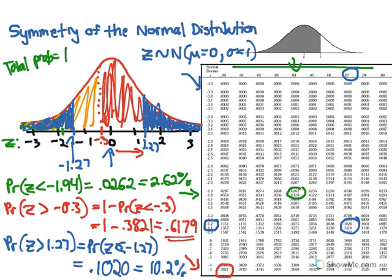So, you can see that blue area is about 10.2% of the total area under the curve. It equals this area. We use this as a proxy to find this. And that shows the symmetrical properties and the total probability properties of the standard normal distribution.